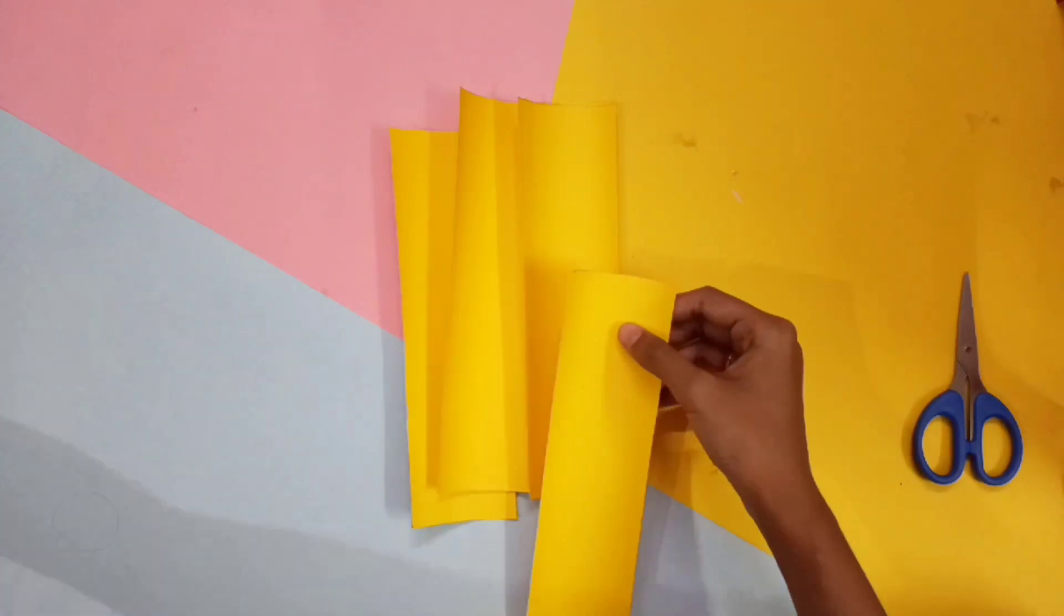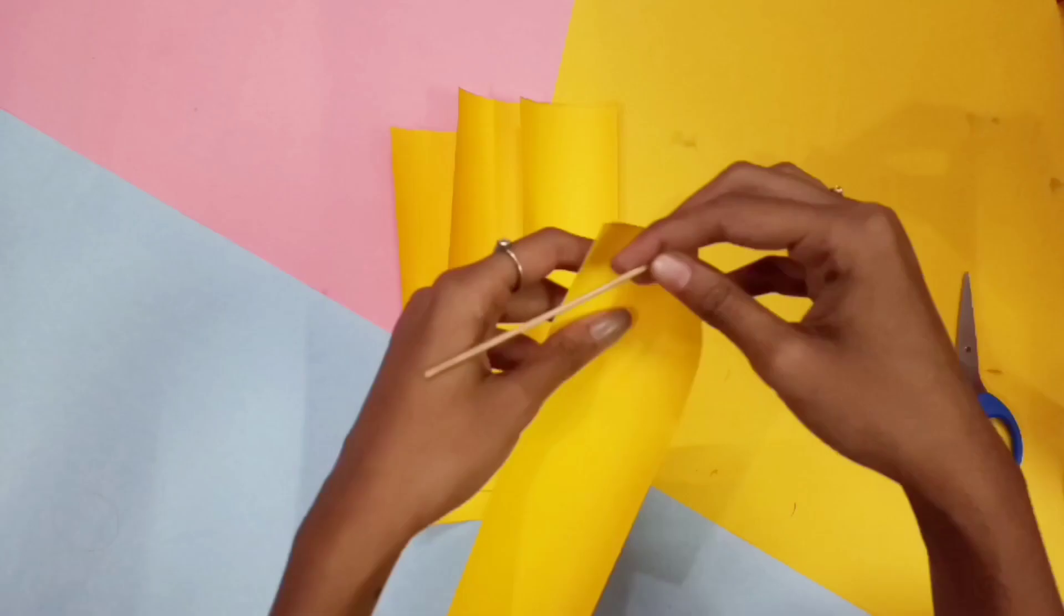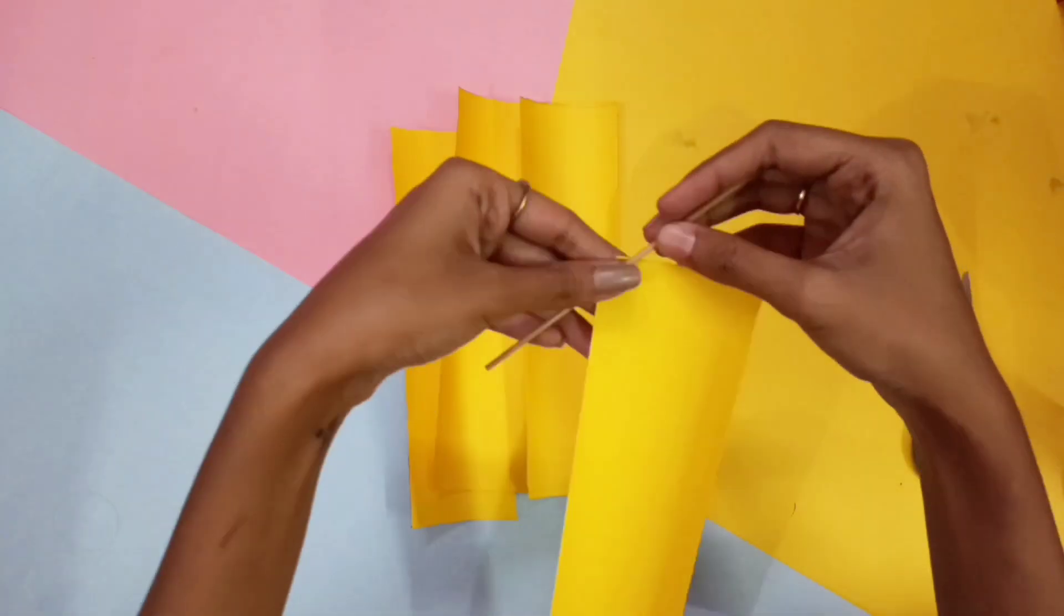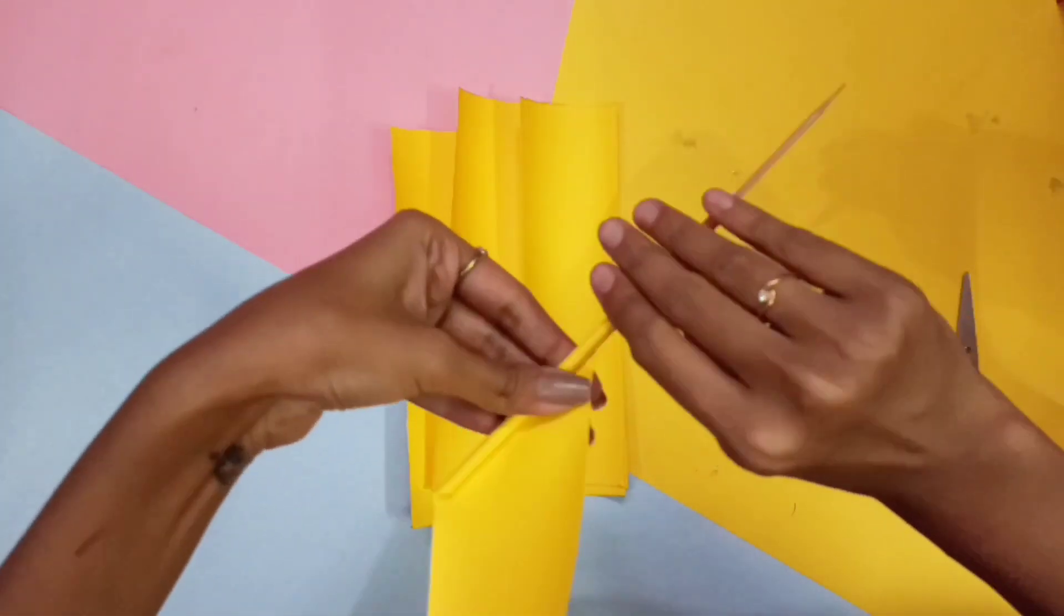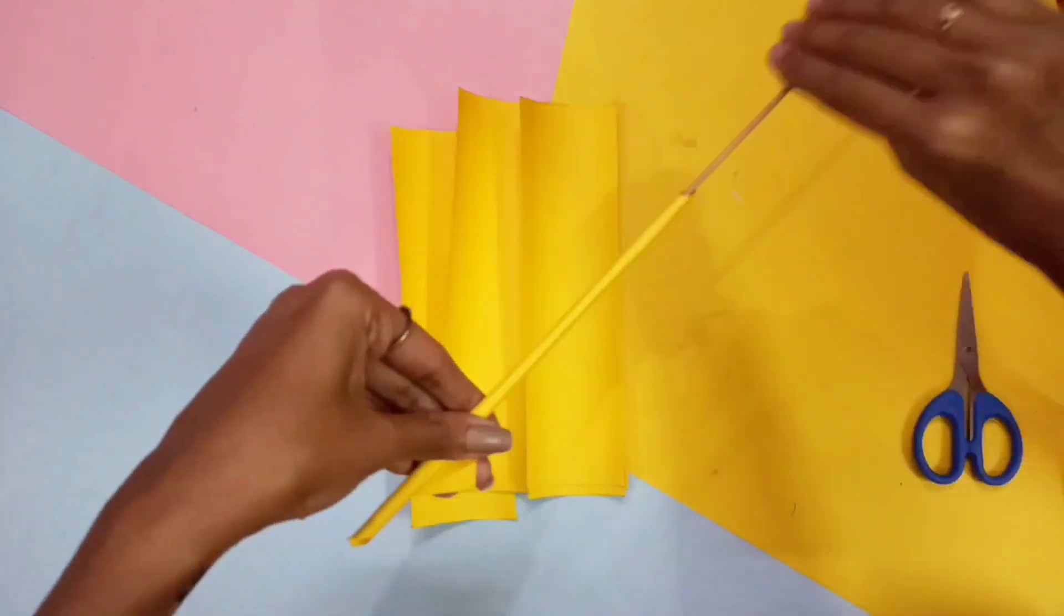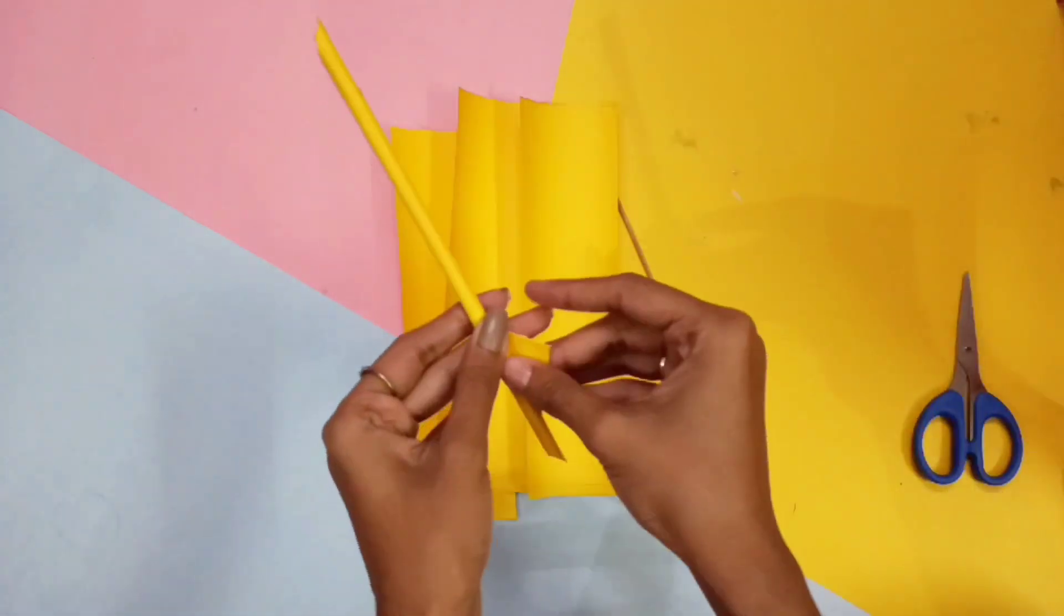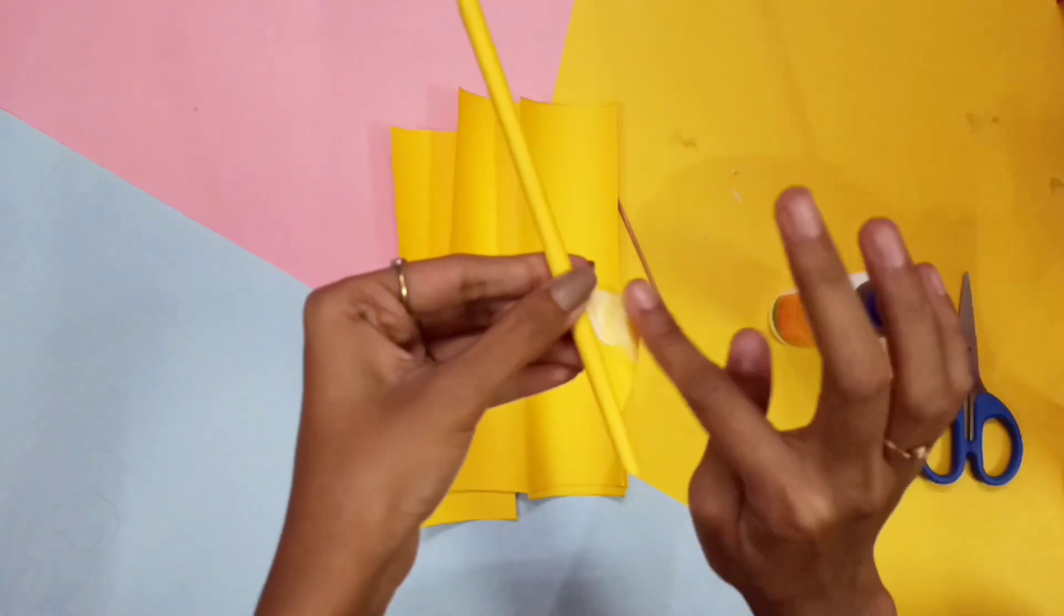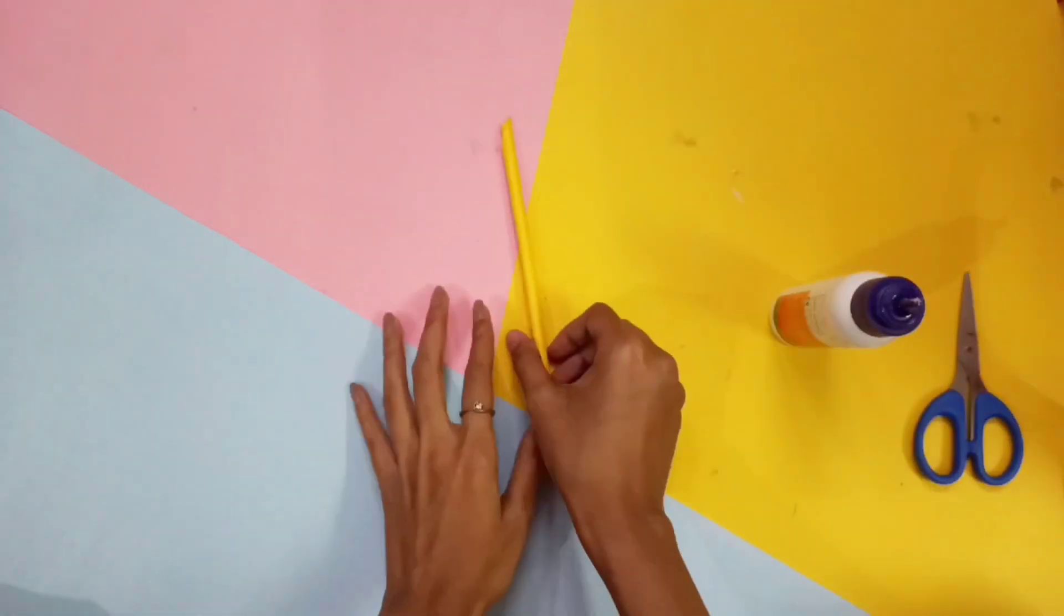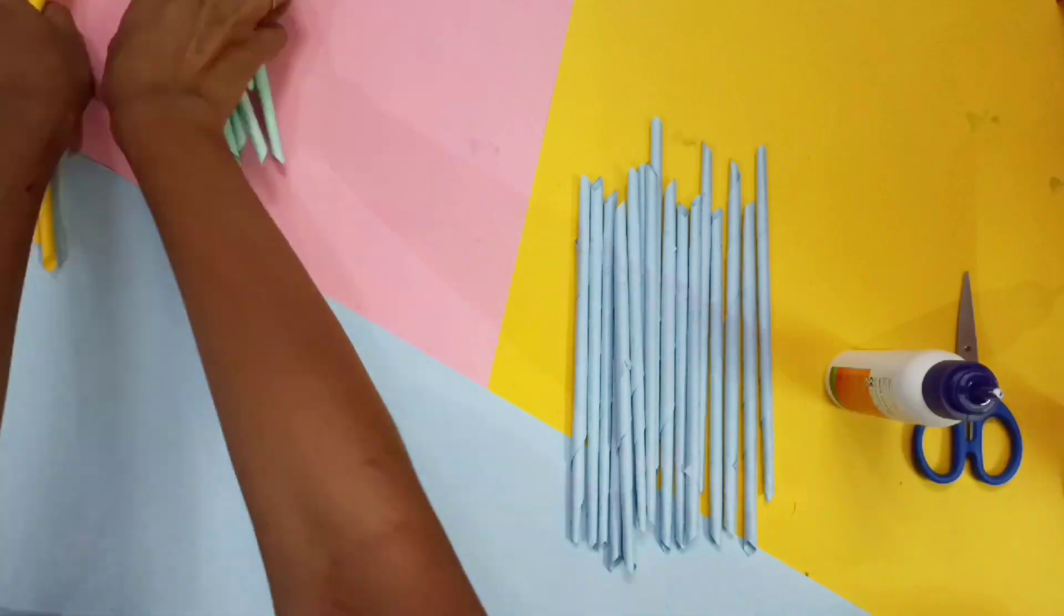First of all we need some paper straps. I have cut them into 22 by 6.1 centimeter. Then roll these papers with the help of a stick and stick the edges. Make as many as you want your paper stand to be big.